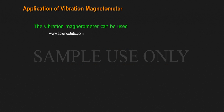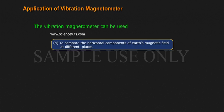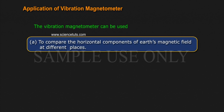Application of Vibration Magnetometer. The Vibration Magnetometer can be used: A. To compare the horizontal components of Earth's magnetic field at different places. And B.